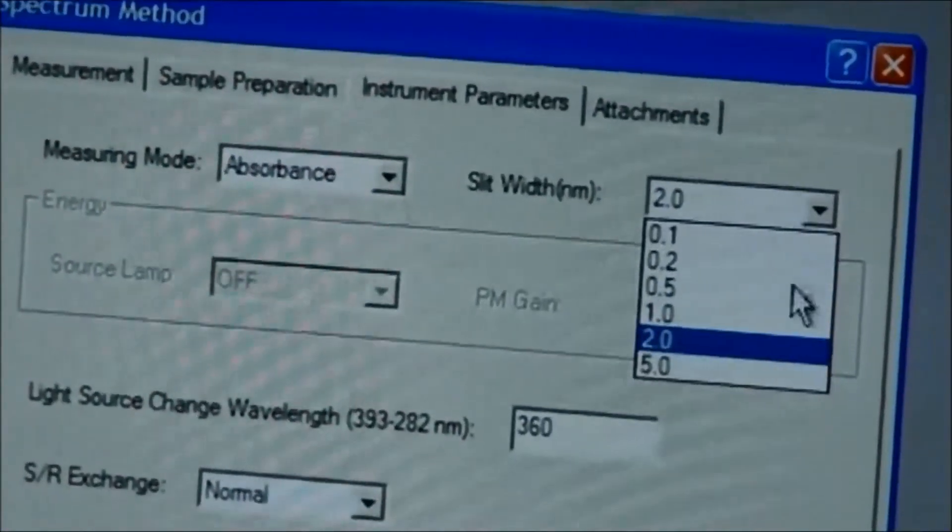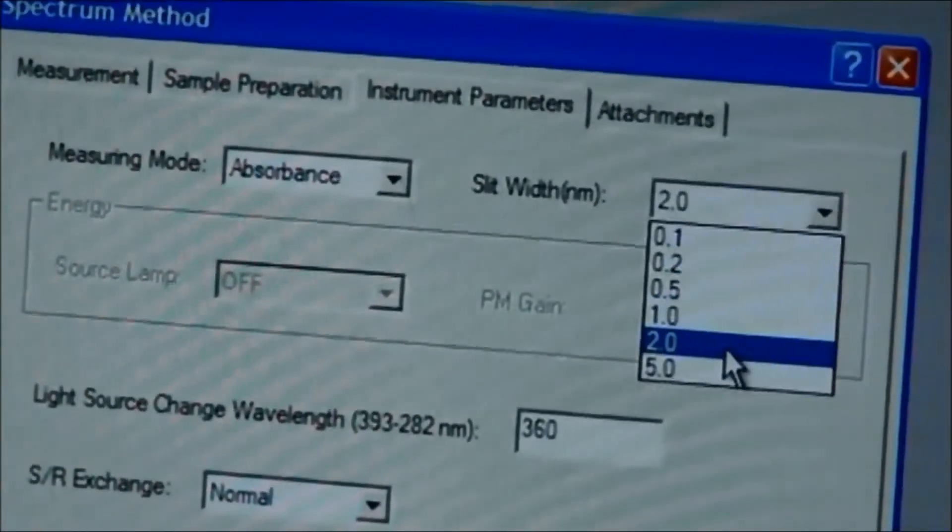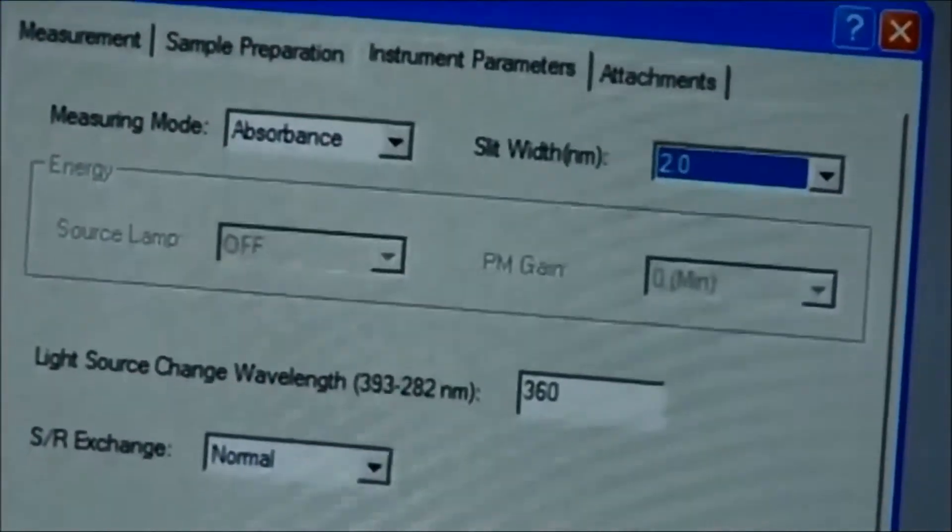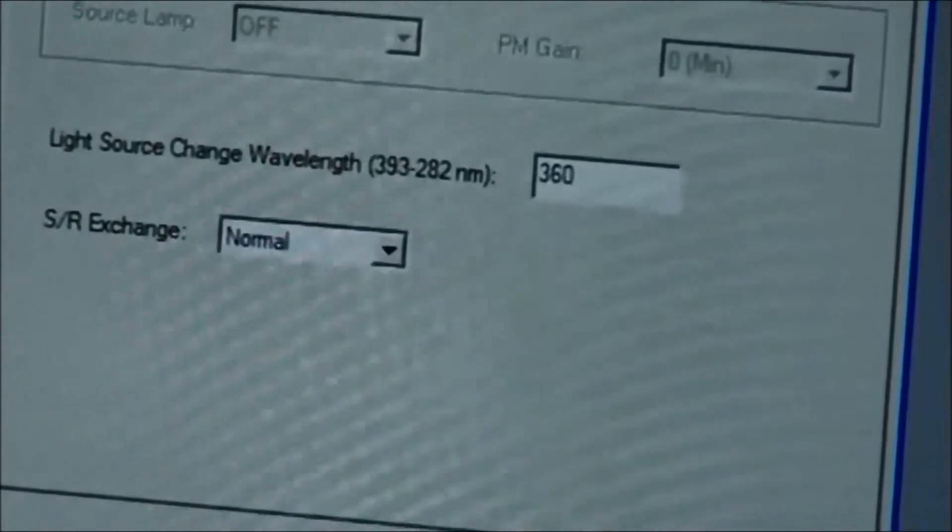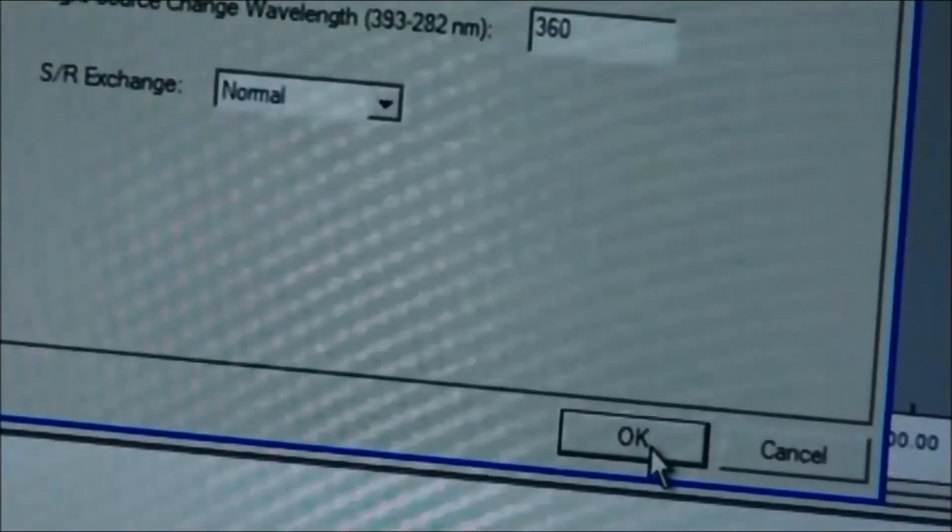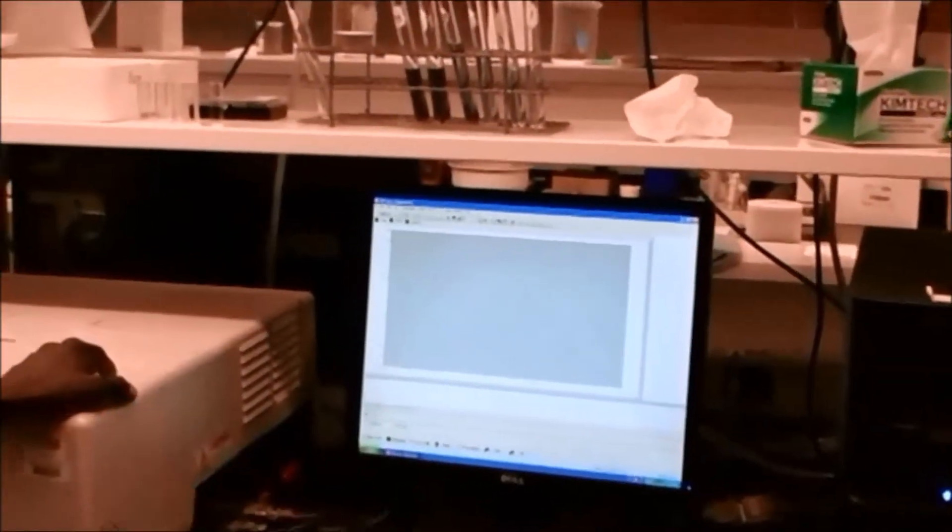For the slit width, you put that on 2.0, and then the edge change will be on normal. You click that, and basically you've done all the methods.